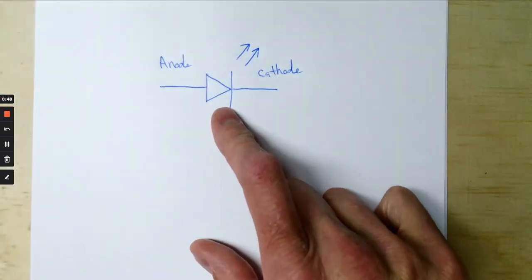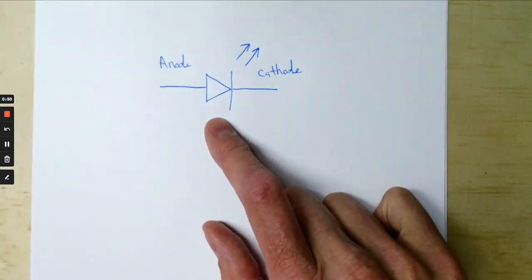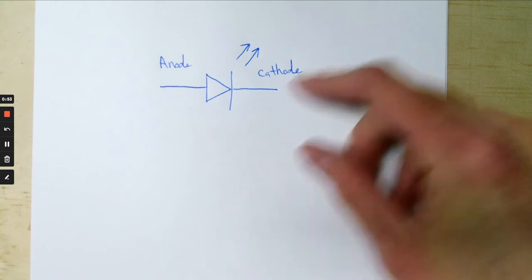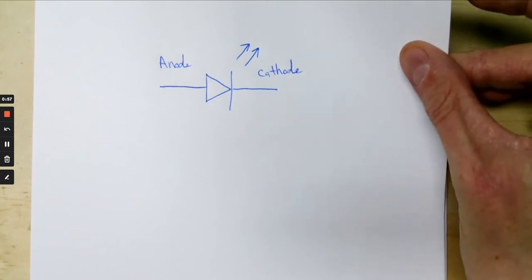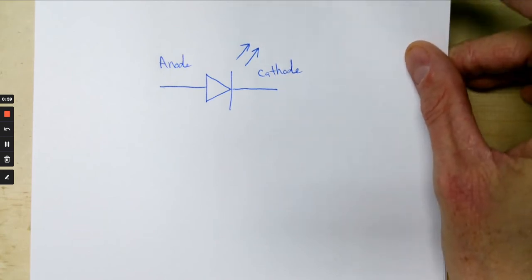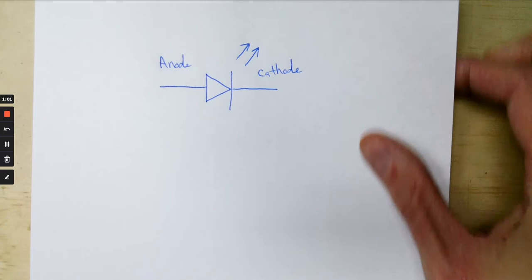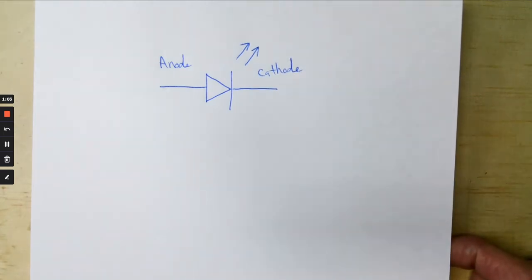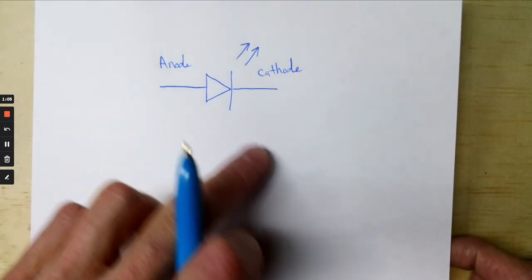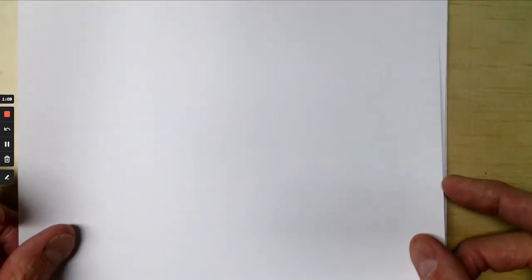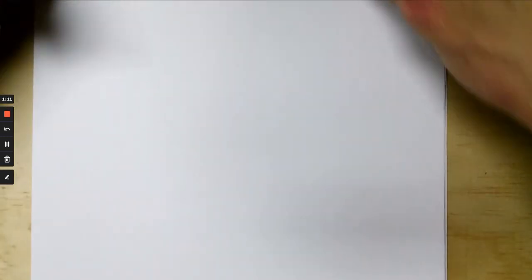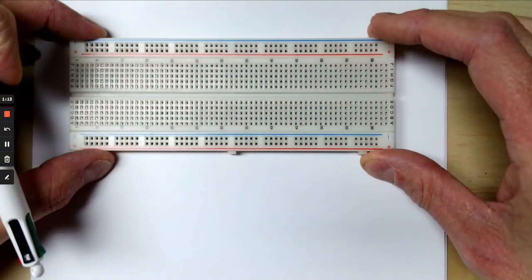So we're going to arrange this in a bridge configuration and then we're going to use it to convert alternating current to direct current. With the LED you'll be able to see it operating because I have a function generator off screen. I'll put in a low frequency AC and you'll see the conduction through the bridge as we go. So let's draw this out first and then we'll put it together on my breadboard here.